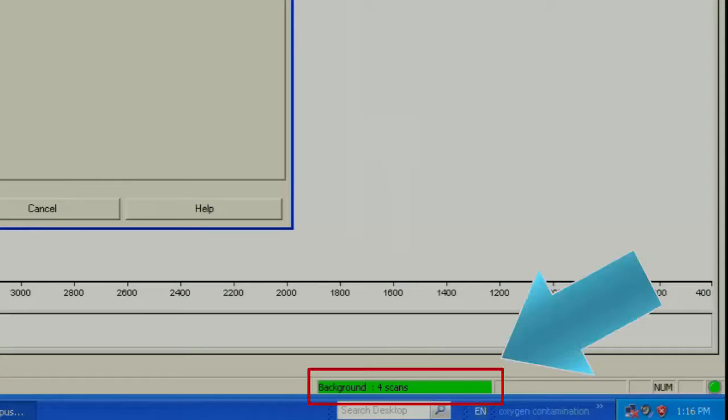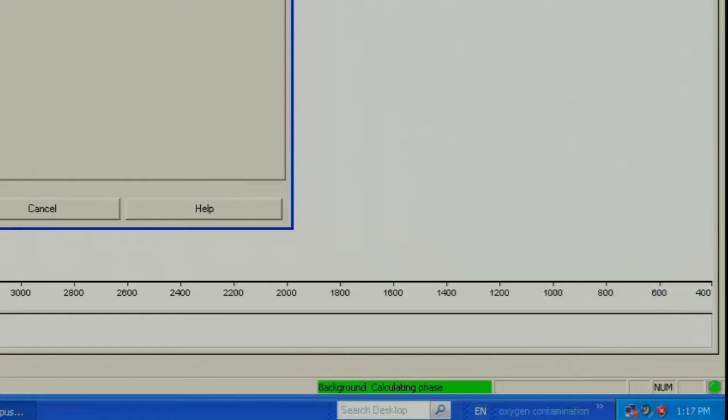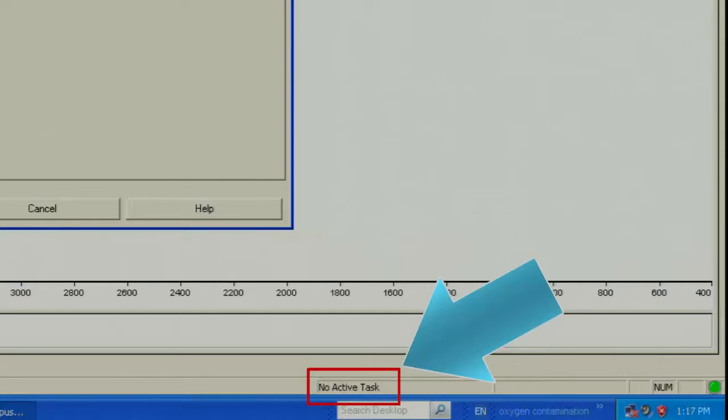At the bottom of the screen, you can see the number of scans as they happen. When it finishes, you should see the words, no active task, on the screen.